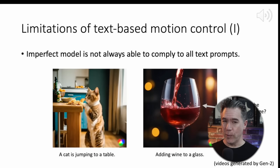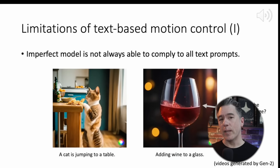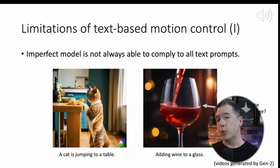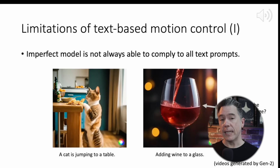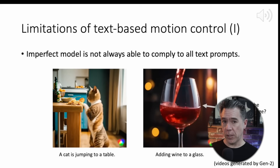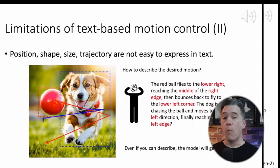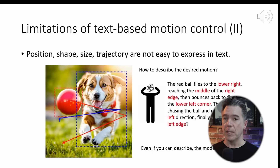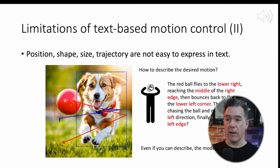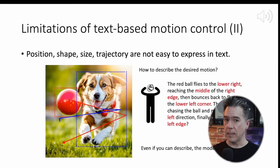Stating the obvious to anyone who has played around with AI video: the generators do have a problem understanding and complying with our text prompts. More so, they tend to get very confused when you have multiple objects in the image, such as the dog here and the ball here, and you're trying to get them to do two separate things.